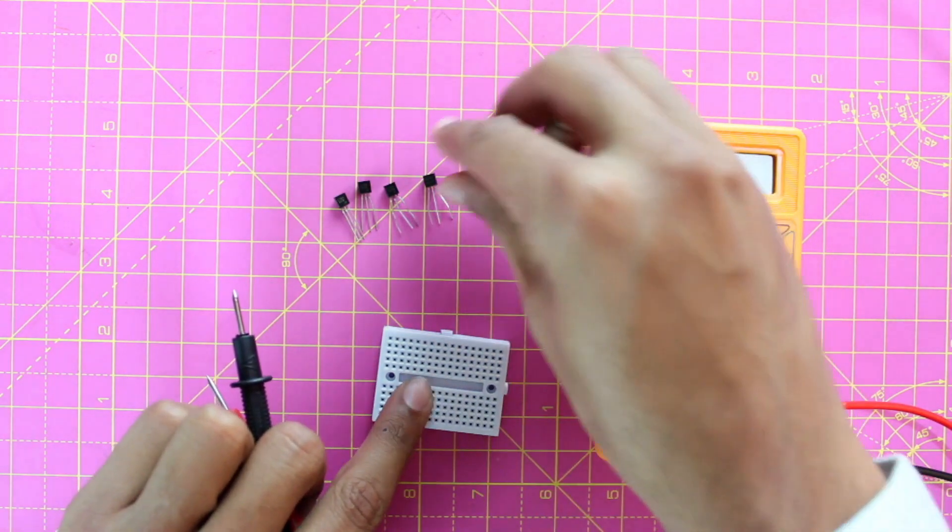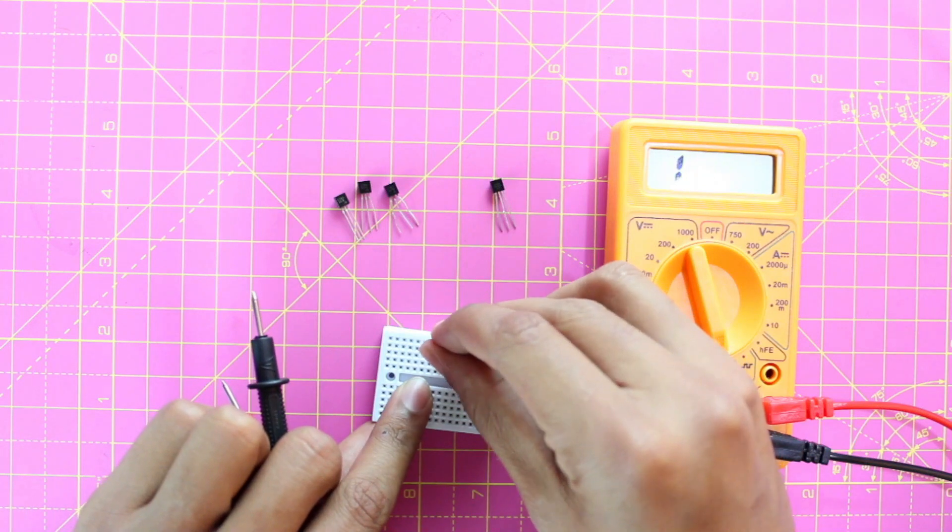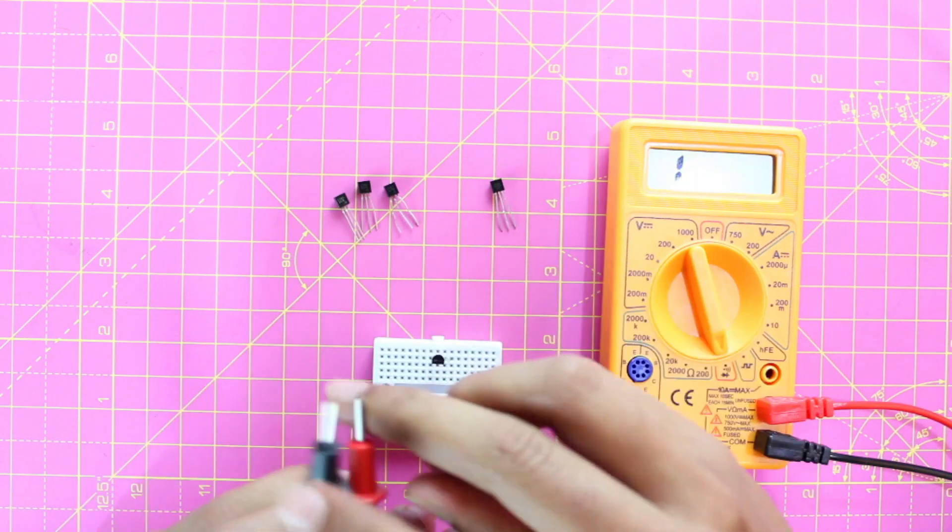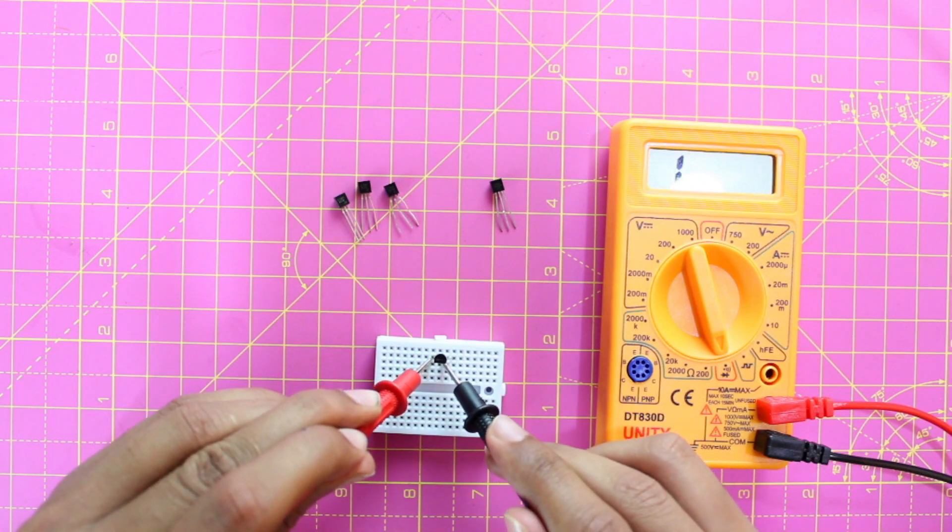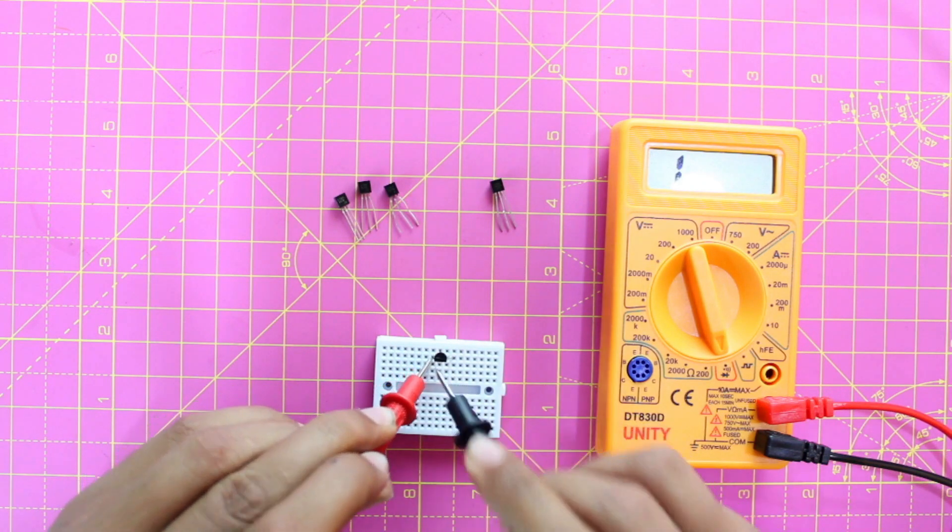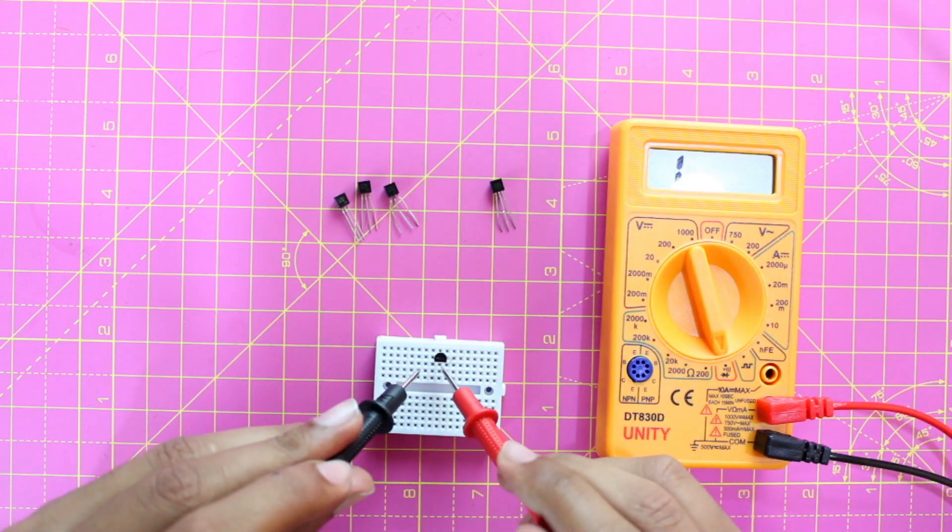Let's test with another transistor. So again I'll mount it on the breadboard and let's try red first and black second. Okay, I'm not getting any voltage drop so I have to change the polarity and go ahead.